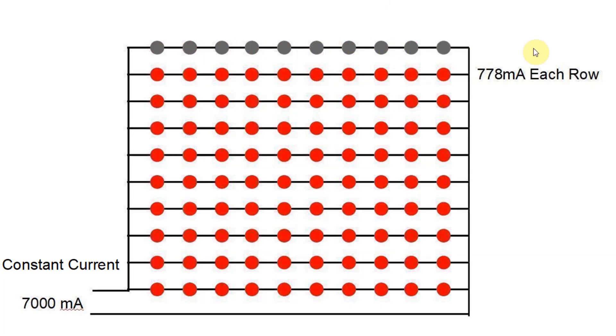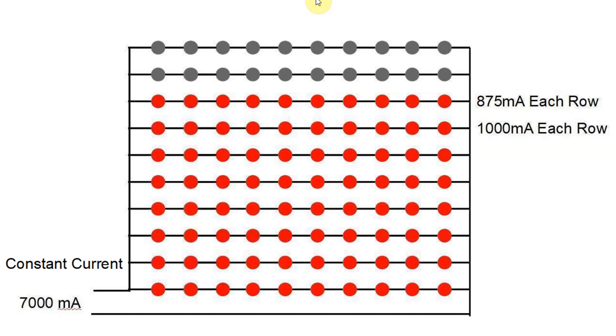There's a second and even more worrying result. Now that we've only got nine rows and it's still putting out 7000 milliamps, the current for each row increases to 778 milliamps. They may or may not be able to withstand that long term. Probably they will. However, if another one blows, it'll take out that row as well.